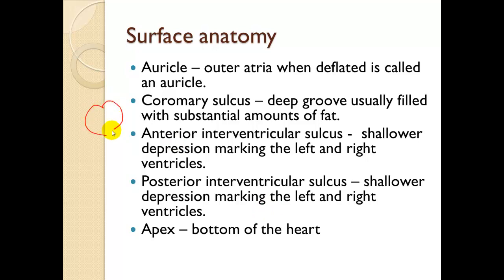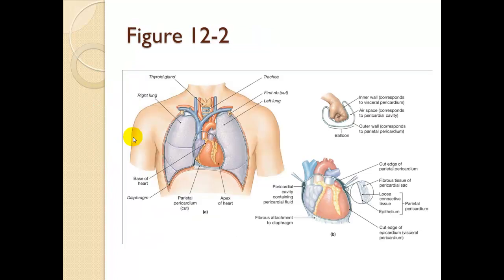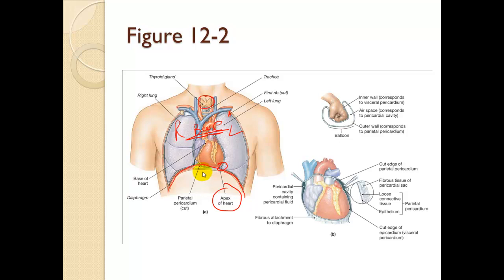The base of the heart is actually up at the top, and the apex is down below. Anatomically, the thyroid gland is at the cricothyroid membrane below the Adam's apple, then the trachea and first rib, with the left and right lungs adjacent. The base of the heart is near the top and the apex is the bottom point. The parietal pericardium touches other organs, and the diaphragm is very close to the heart. The best place to perform a pericardial synthesis is from the xiphoid process at a 45-degree angle aiming toward the shoulder.